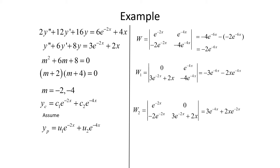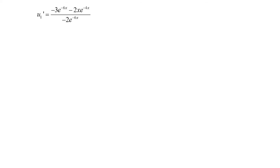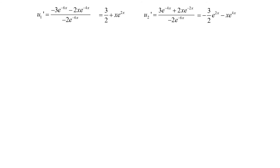Now we find u1' and u2'. u1' = W1/W = [-(3e^(-6x) + 2x·e^(-4x))] / (-2e^(-6x)). Simplifying: the negatives and e^(-6x) cancel in the first term giving 3/2, and in the second term the negatives and 2s cancel leaving x·e^(2x). So u1' = 3/2 + x·e^(2x). For u2': W2/W = (3e^(-4x) + 2x·e^(-2x)) / (-2e^(-6x)), which simplifies to -3/2·e^(2x) - x·e^(4x).